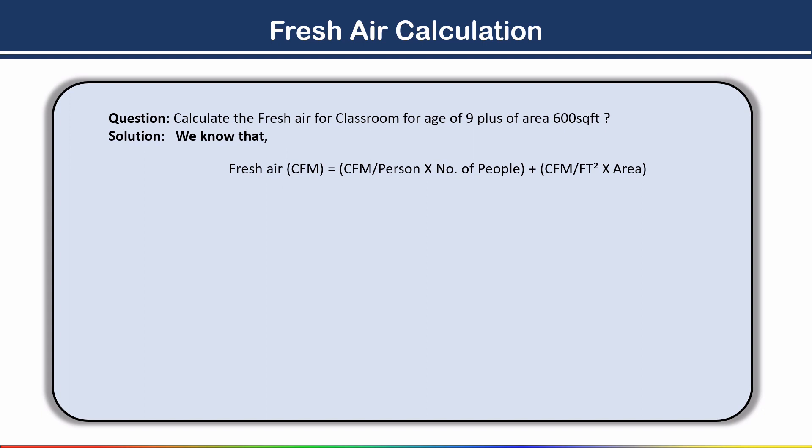CFM is the imperial unit of air flow rate — Cubic Feet Per Minute. The metric unit is cubic meters per second. Here we are working in imperial units, so we use CFM. Fresh air CFM = (CFM per person × number of people) + (CFM per square feet × area).